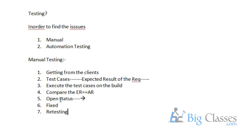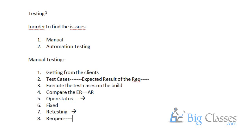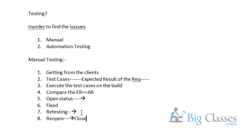If the bug is still reproducible during retesting, we reopen the bug. If it is not reproducible, we close the bug. These are the two outcomes from retesting — either reopen or close.